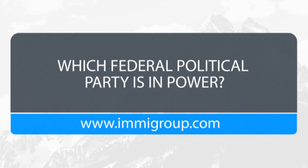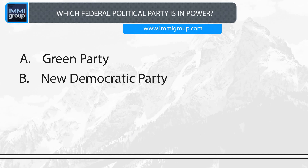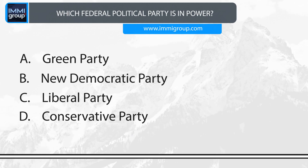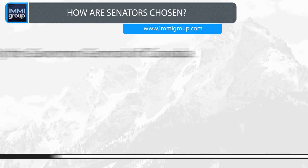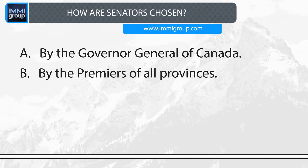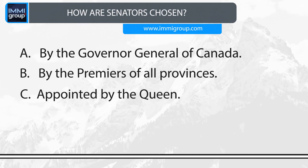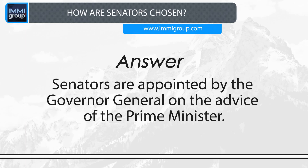Which federal political party is in power? A. Green Party. B. New Democratic Party. C. Liberal Party. D. Conservative Party. Answer: Conservative Party. How are Senators chosen? A. By the Governor General of Canada. B. By the Premiers of all provinces. C. Appointed by the Queen. D. Senators are appointed by the Governor General on the advice of the Prime Minister. Answer: Senators are appointed by the Governor General on the advice of the Prime Minister.